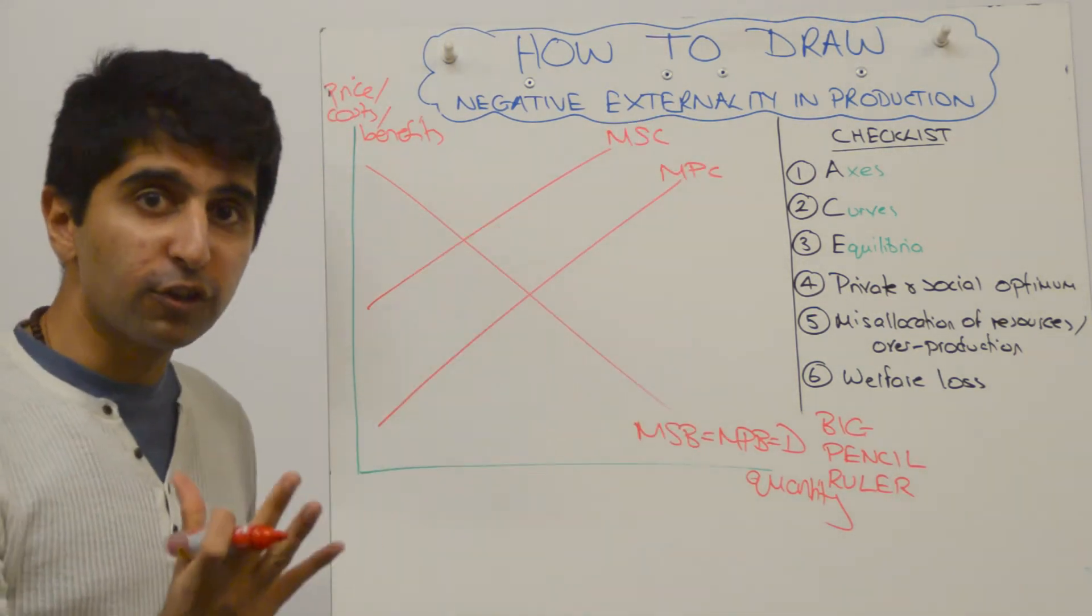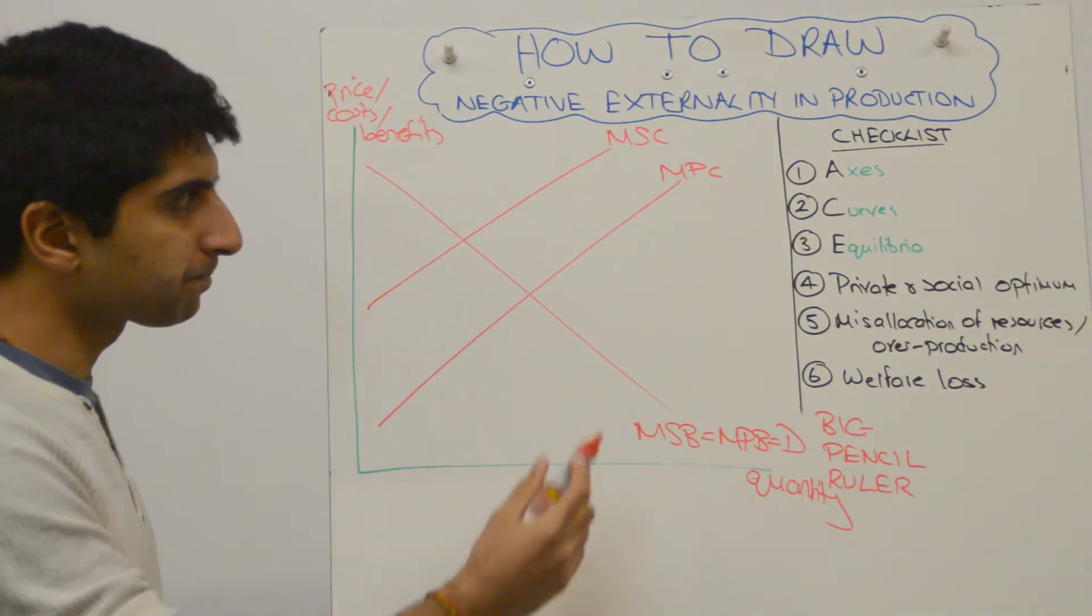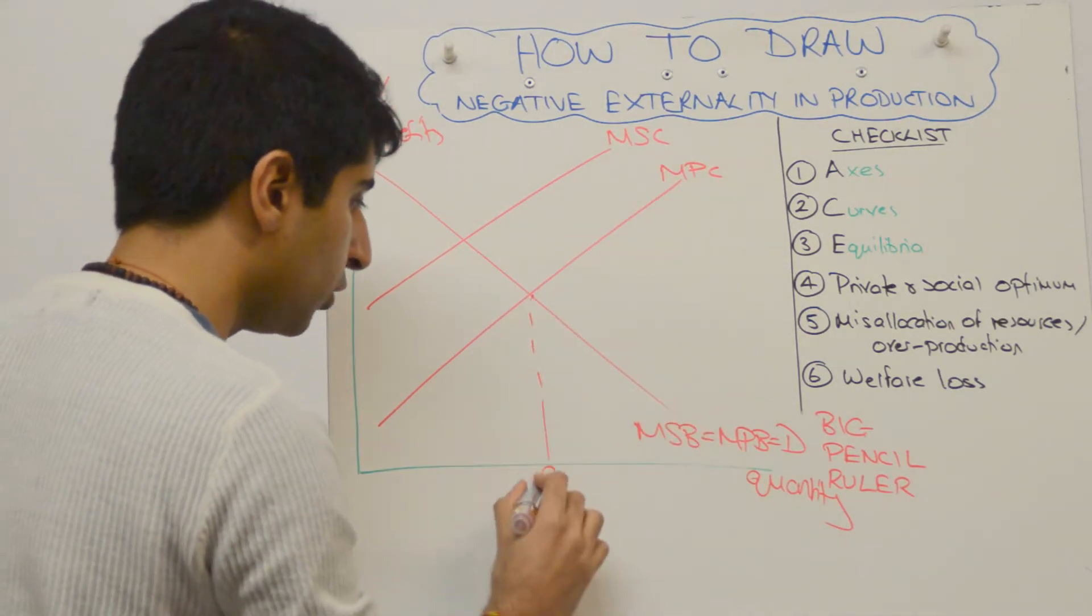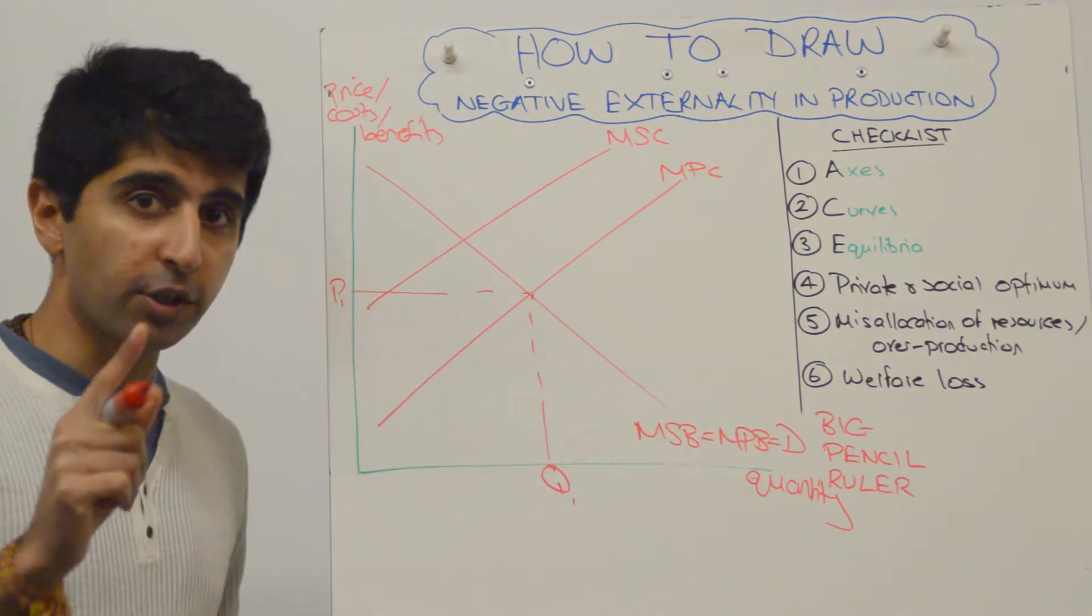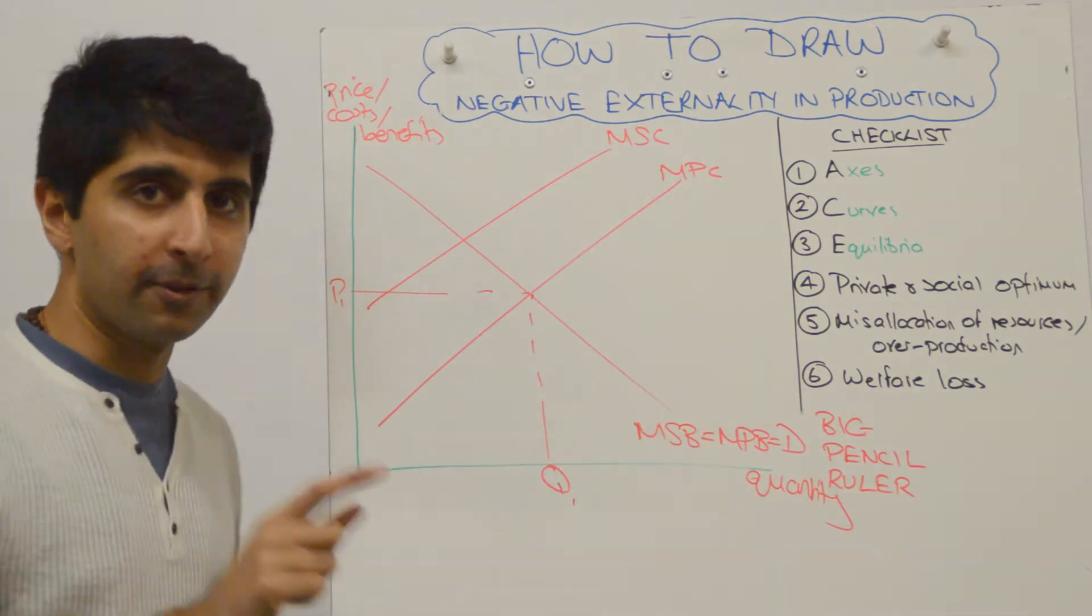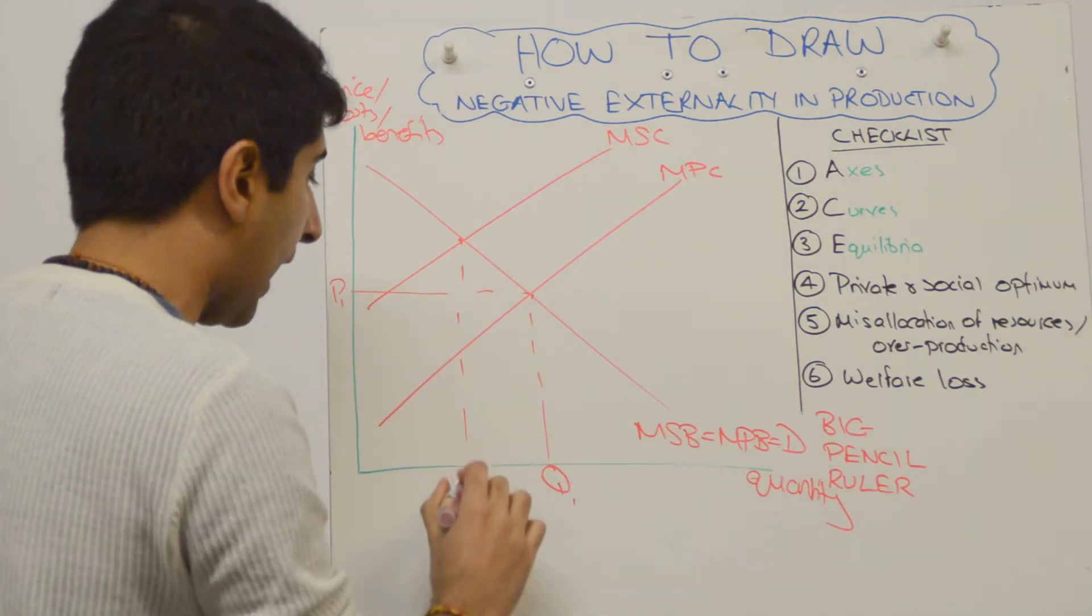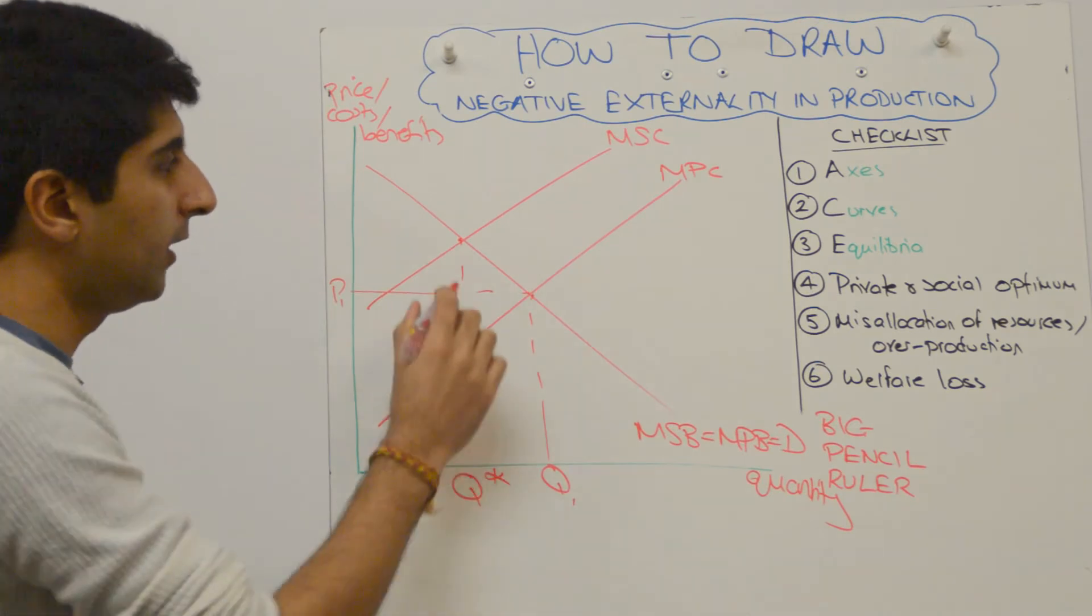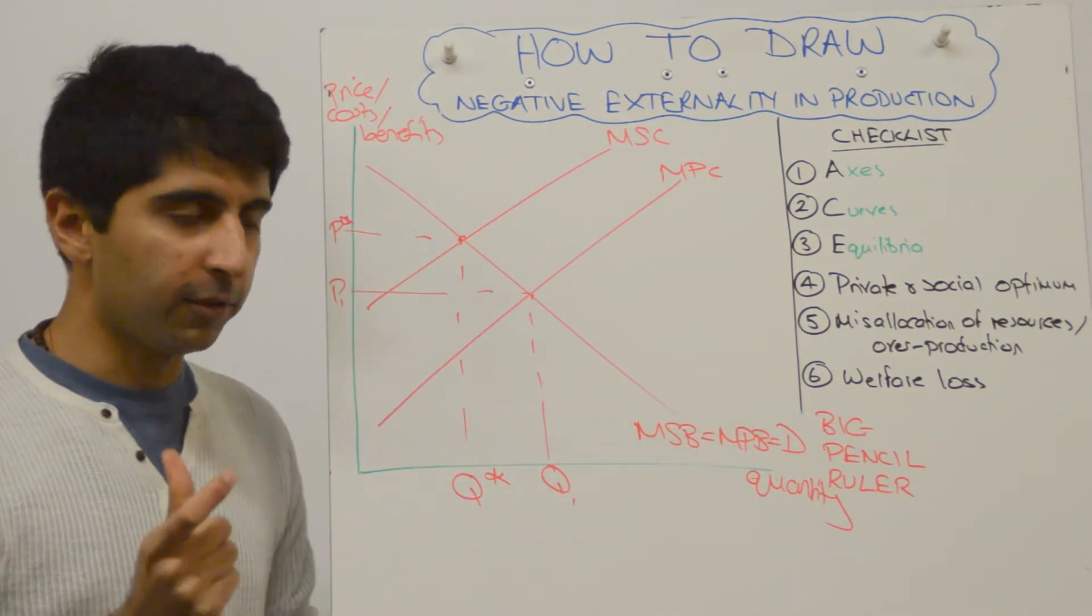Now that we've done that, that's a good start. We need to get our private optimums and our social optimums labeled. Private optimum is where MPC equals MPB. So that's going to be here at Q1 and that gives us a price of P1. So that's the private optimum. The social optimum is where MSC equals MSB. You, as a student, should make this clear to the examiner. So I label that Q star with a price of P star. That implies that is the optimum, the social optimum.